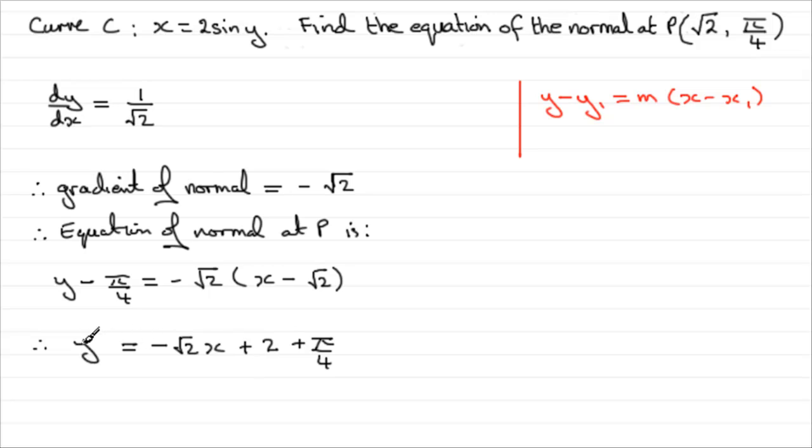So essentially, I've got it in the form y equals mx, m being minus root 2, plus c, the c being this value here. Now you can leave it like that, or you could even just put it in brackets, and you've got your c value. Okay, well that gives us our equation of the normal and brings us to the end of this question.